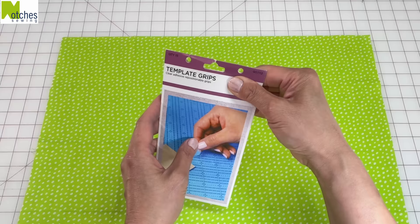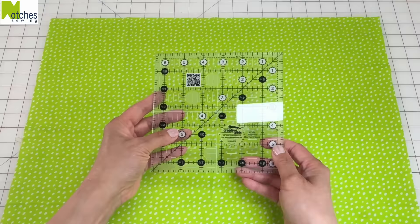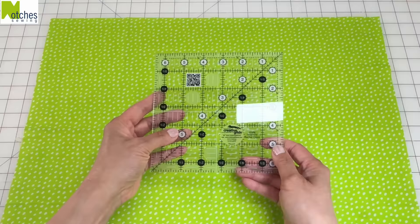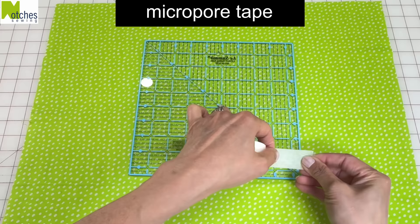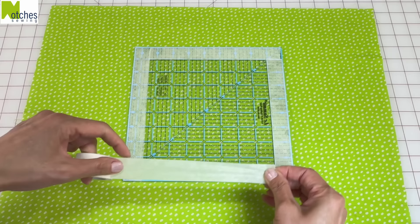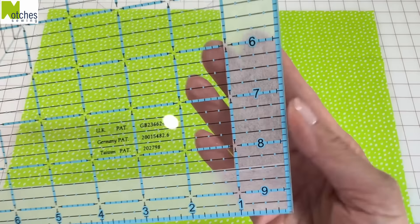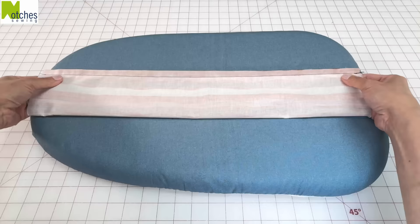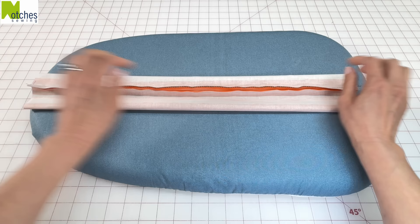These are stick-on template grips. They're round with a little circle in the middle. They're placed on the back of your template so that it doesn't slide around when you're cutting your fabric. Some templates already have a rough surface on the back to keep it from slipping. This is Micropore surgical tape. When put on the back of a template, it works really well to grip the fabric. What's also nice is that it's see-through and I can see the markings a bit better.